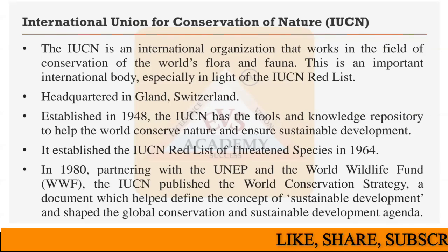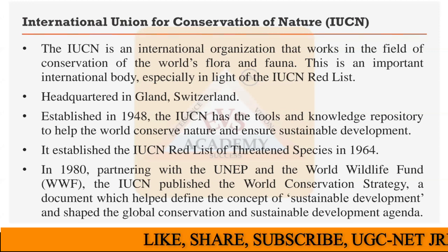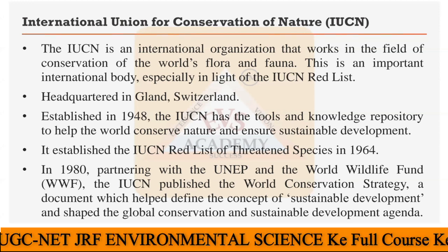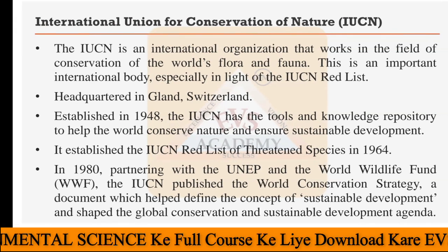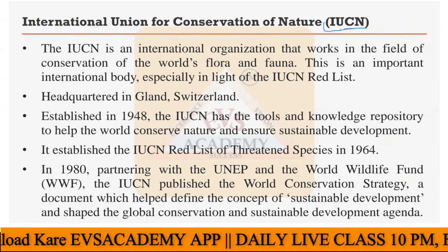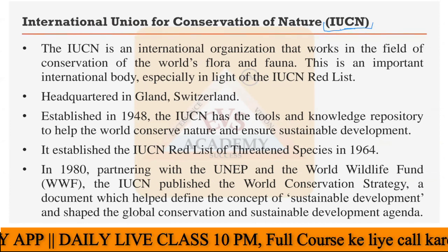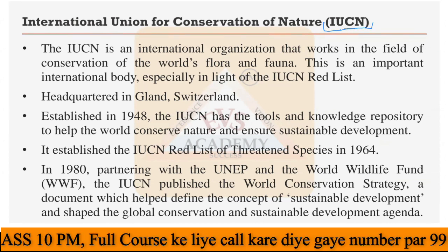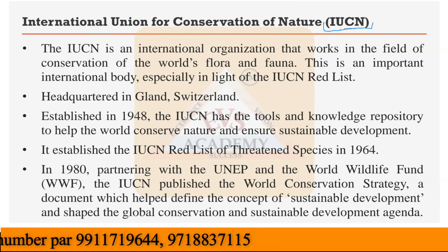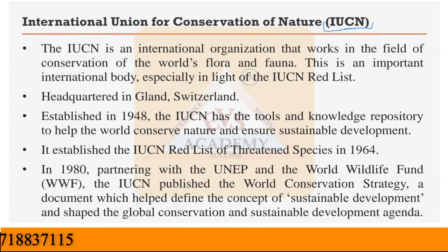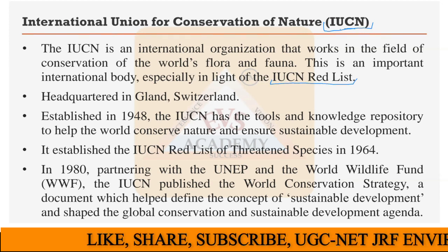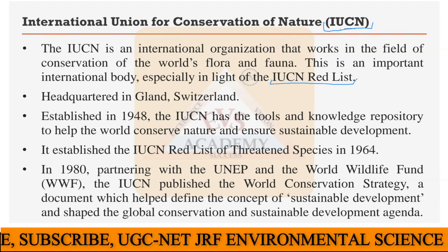Welcome again everyone to the AVS Academy class on paper 2 of Environmental Science. In the last class we were discussing the International Union for Conservation of Nature, IUCN. IUCN mainly works on categorizing all organisms present on Earth's surface. The IUCN categories depend on the availability of organisms — whether they are endangered, normal, or extinct species. Today we will see all nine IUCN categories in detail.